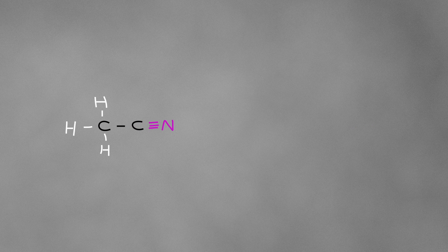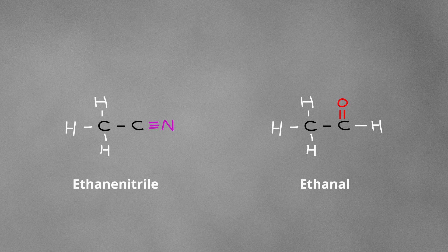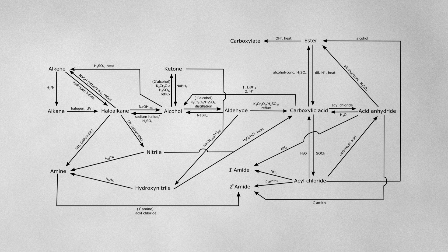How about nitriles? If we take a look at the structure of ethanenitrile, the oxygen-based organic compound it most closely resembles is ethanal. Nitriles are just nitrogen-based aldehydes. The only difference is that oxygen makes two bonds and nitrogen makes three. In fact, listen to the name nitrile — it's just a nitrogen carbonyl. And if we return to the reaction summary, we can see that to go from a nitrile to an amine we need to use a reducing agent, which is exactly the same as when we go from an aldehyde back to an alcohol. It's the same thing because they're pretty much the same molecules — there's just an oxygen version and a nitrogen version.